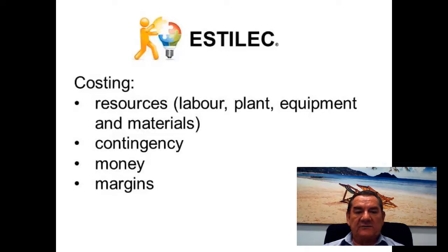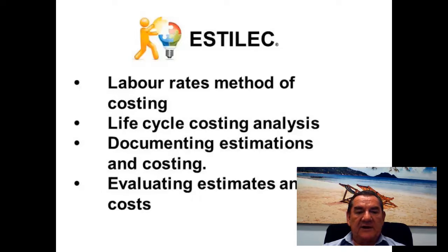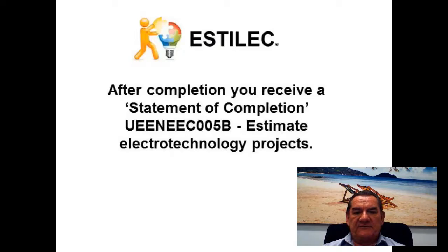The course covers costing resources such as labour, plant, equipment and materials; contingencies; money; margins; labour rates and method costing; life cycle costing analysis; documenting estimations and costing; and evaluating estimates and costs. After completion, you receive a statement of completion for UEE-NEE-C005 — Estimate Electro-Technology Projects.